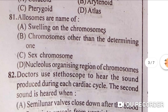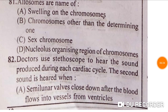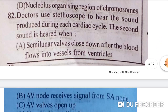Allosomes are the name for sex chromosomes — option C is correct. Next: doctors use a stethoscope to hear the sound produced during each cardiac cycle. The second heart sound is heard when semilunar valves close after blood flows into the vessels from the ventricles — option A is correct.